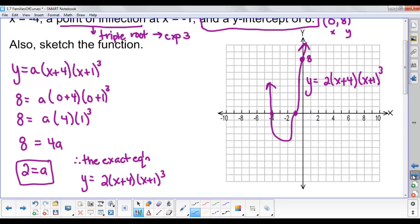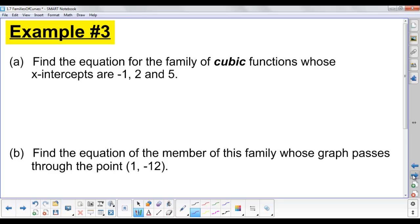Example 3 says find the equation for the family of cubic functions whose x-intercepts are -1, 2, and 5. I just want you to find the family of cubic functions, so all I really want is the general equation. Keep the a in there and don't substitute it with anything. So y equals a(x+1)(x-2)(x-5). That's it. That is the family of cubic functions.